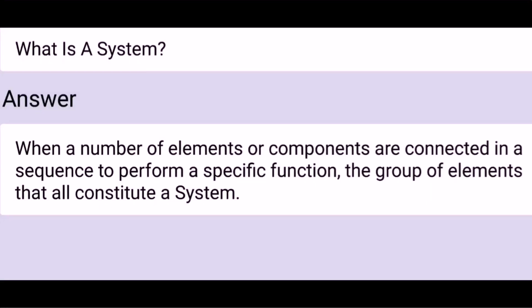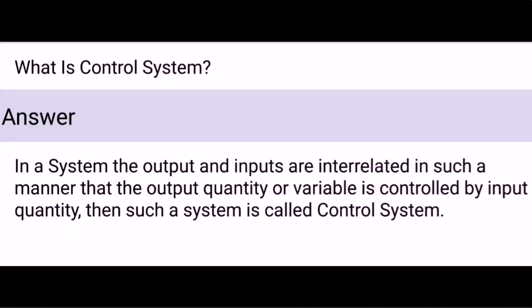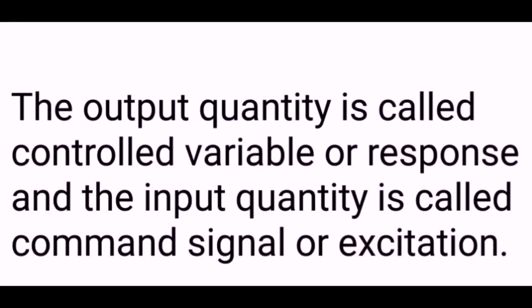What is a system? When a number of elements or components are connected in a sequence to perform a specific function, the group of elements that all constitute a system. What is a control system? In a system, the output and inputs are interrelated in such a manner that the output quantity or variable is controlled by the input quantity, then such a system is called a control system. The output quantity is called controlled variable or response, and the input quantity is called command signal or excitation.